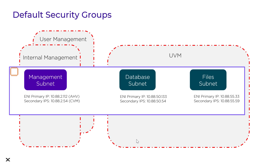Back in the olden days of NC2, we had three default AWS security groups that could be used to limit access to our AHV clusters. The internal management was really just for internal engineering use, so in reality we were left with two: user management, which protected AHV and the CVMs (our storage controllers), and UVM — one security group to protect all of your running workloads. So it didn't matter if you had one or ten subnets; they were all controlled under the same security group, which didn't provide as granular control as you wanted.